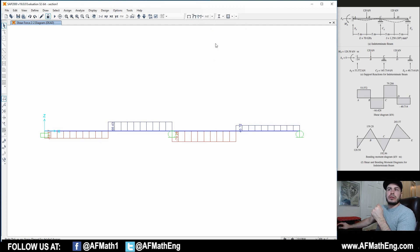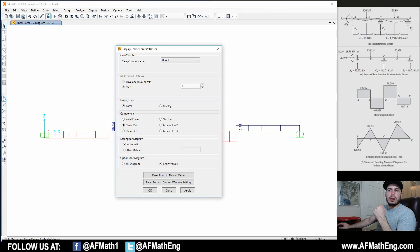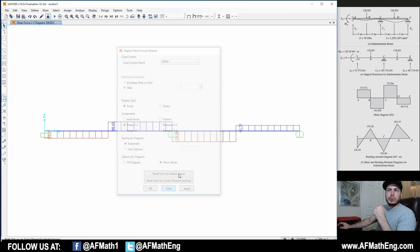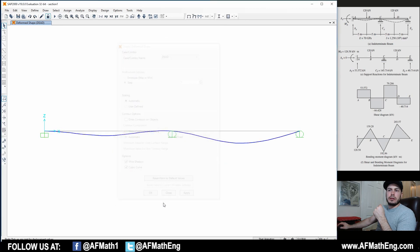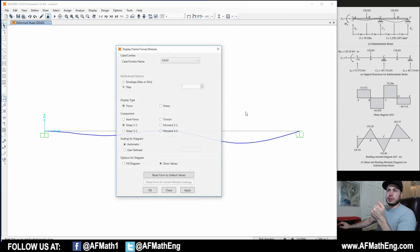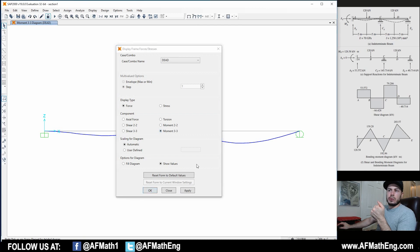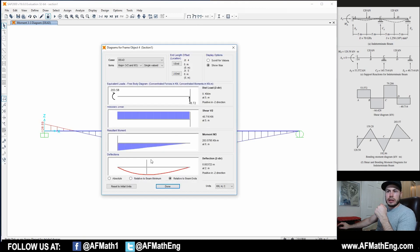We can take a look at the deflected shape, for example, of the beam. The wire shadow there, that's the original beam, and then there's the deflected shape. We can also take a look at deflection values at certain points in this beam. That kind of stuff.